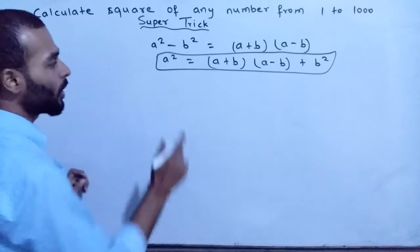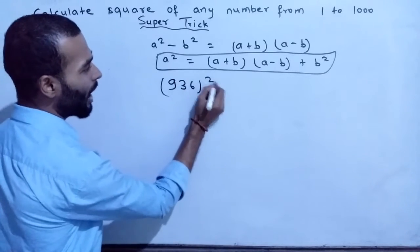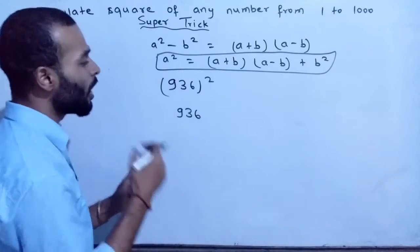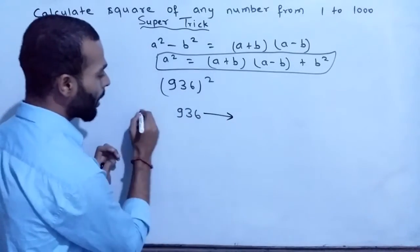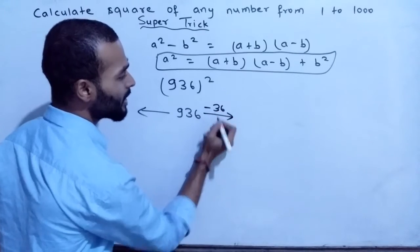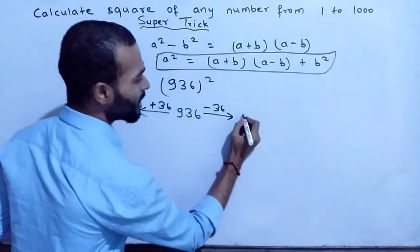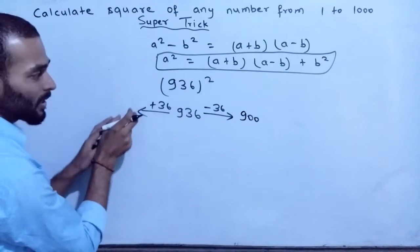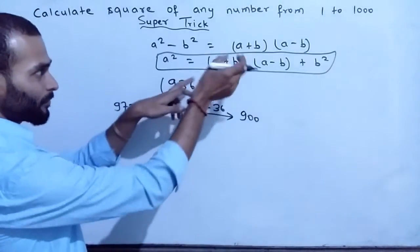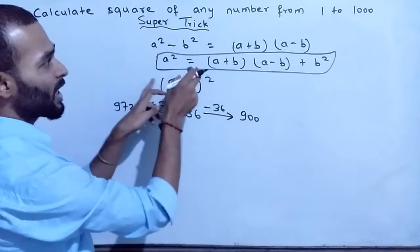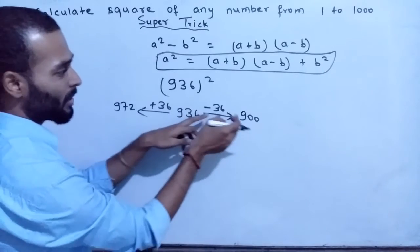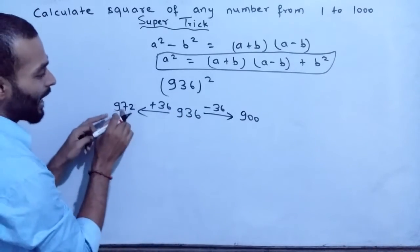Look at the next example: 936 squared. You need to find the nearest number to 936 with a zero or double zero. The nearest such number is 900. To make 900 from 936, subtract 36, so b equals 36. Then: (936 − 36) = 900 and (936 + 36) = 972. The number subtracted must also be added, to match the formula a² = (a+b)(a−b) + b².